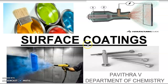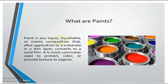In surface coating, we will study about paints. Paint is any liquid, liquefiable or mastic composition that after application to the substrate in a thin layer converts to a solid film. It is most commonly used to protect, color, or provide texture to the object, which gives an attractive look.